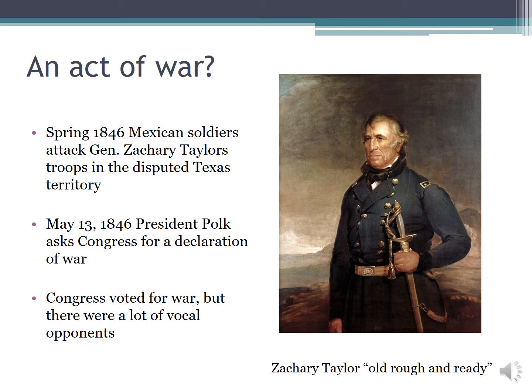When President James Polk took office in 1845, he promised the American people he would fulfill Manifest Destiny — meaning the United States would stretch from the Atlantic coast to the Pacific coast — and he was willing to do just about anything to make that happen. He especially wanted California. Even though they didn't yet know about the gold, they understood California was strategically located on the western shores of North America and was already engaged in a Pacific trading network that could be very beneficial to Americans. So President Polk essentially wanted to pick a fight with Mexico.